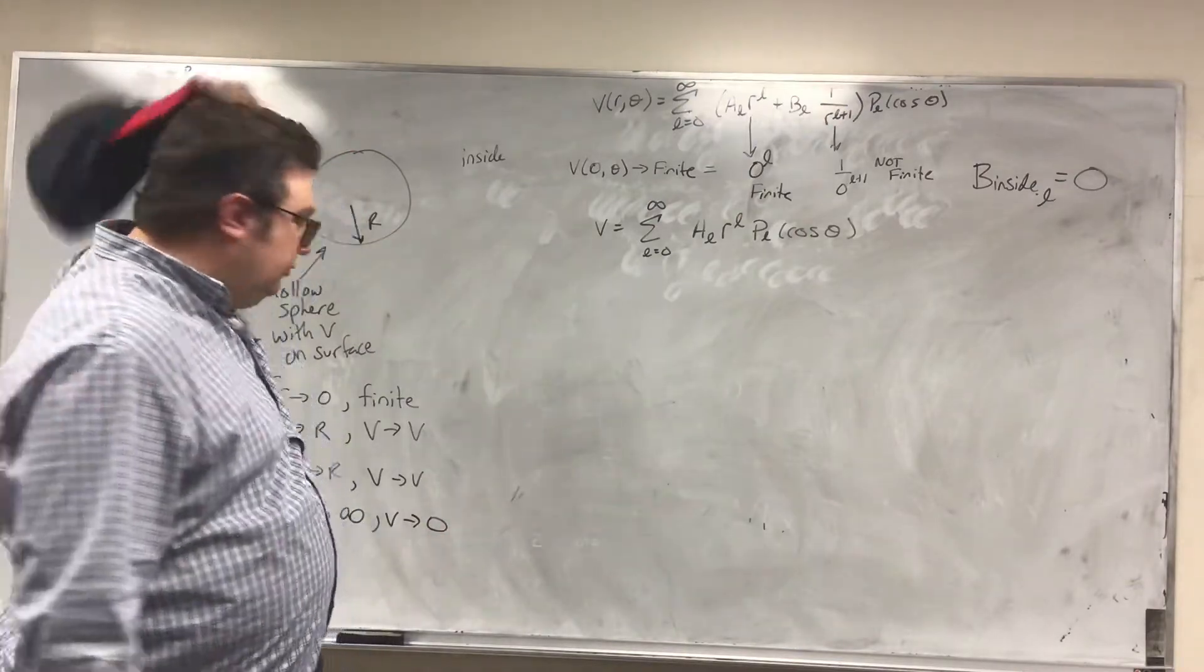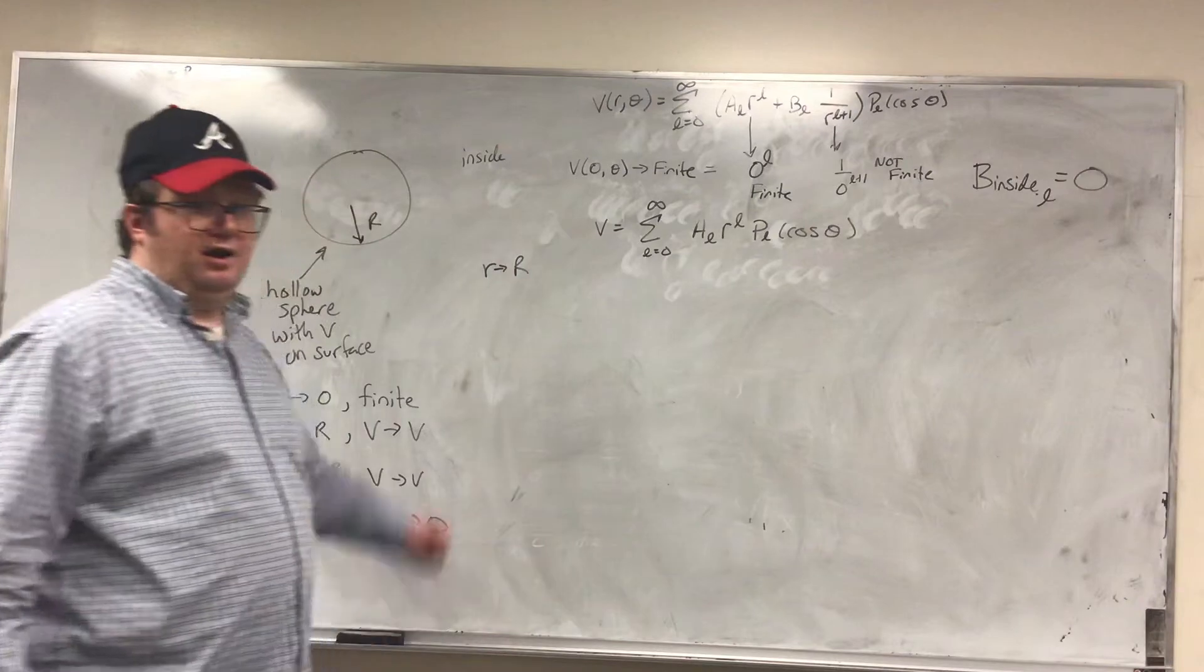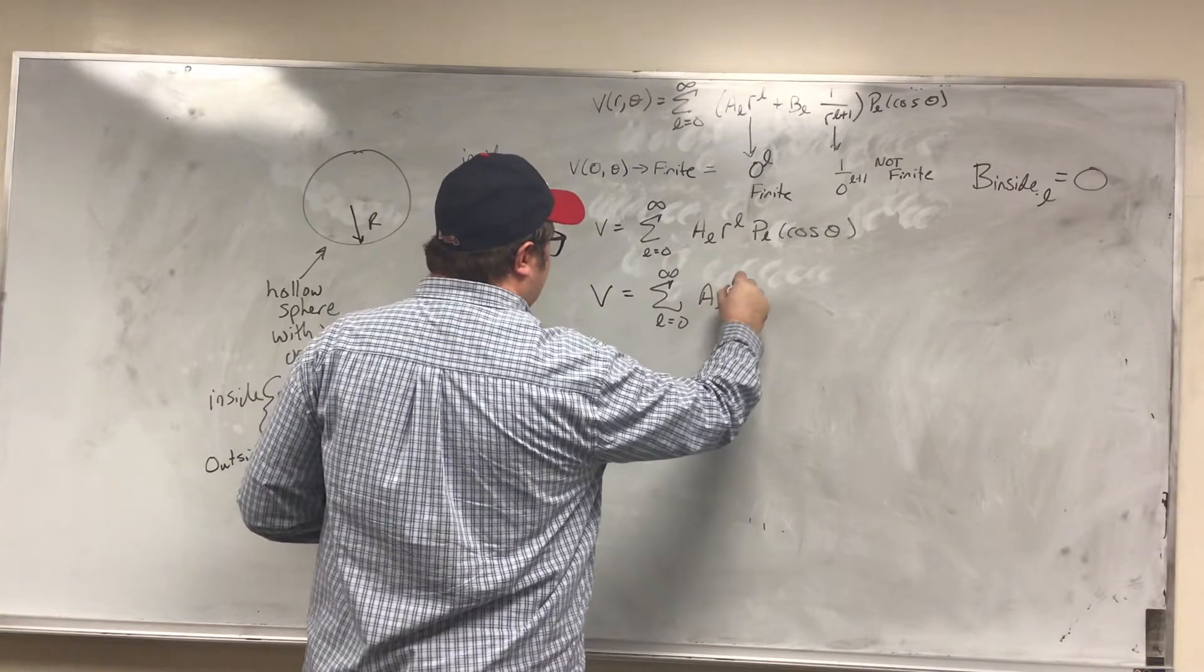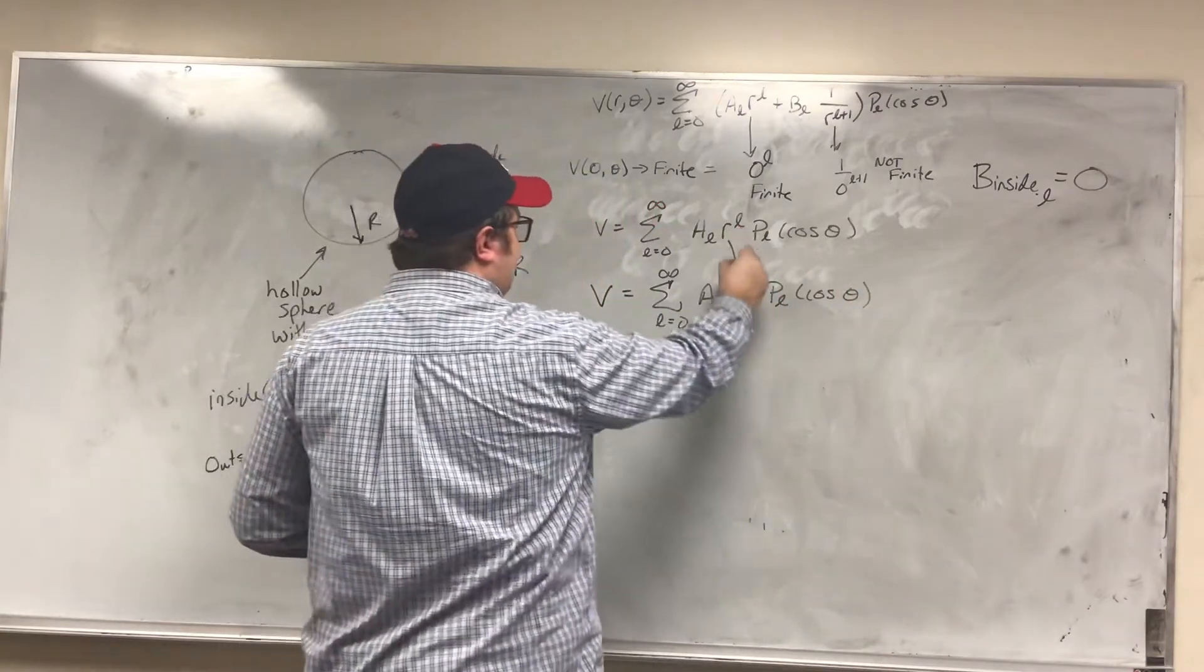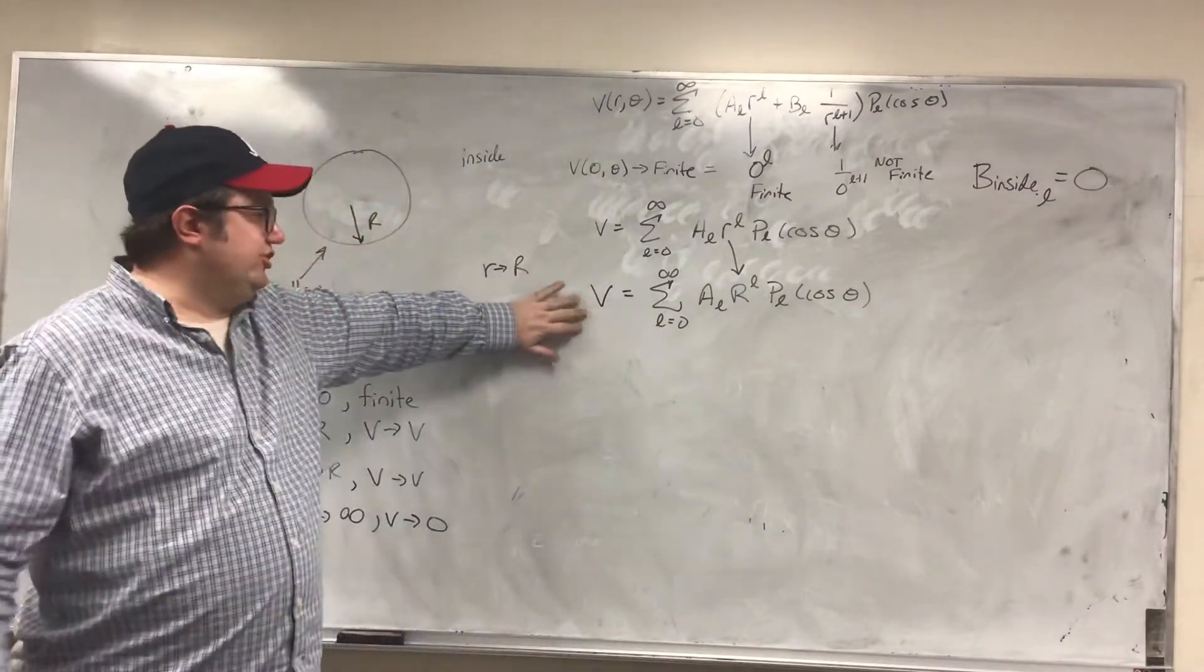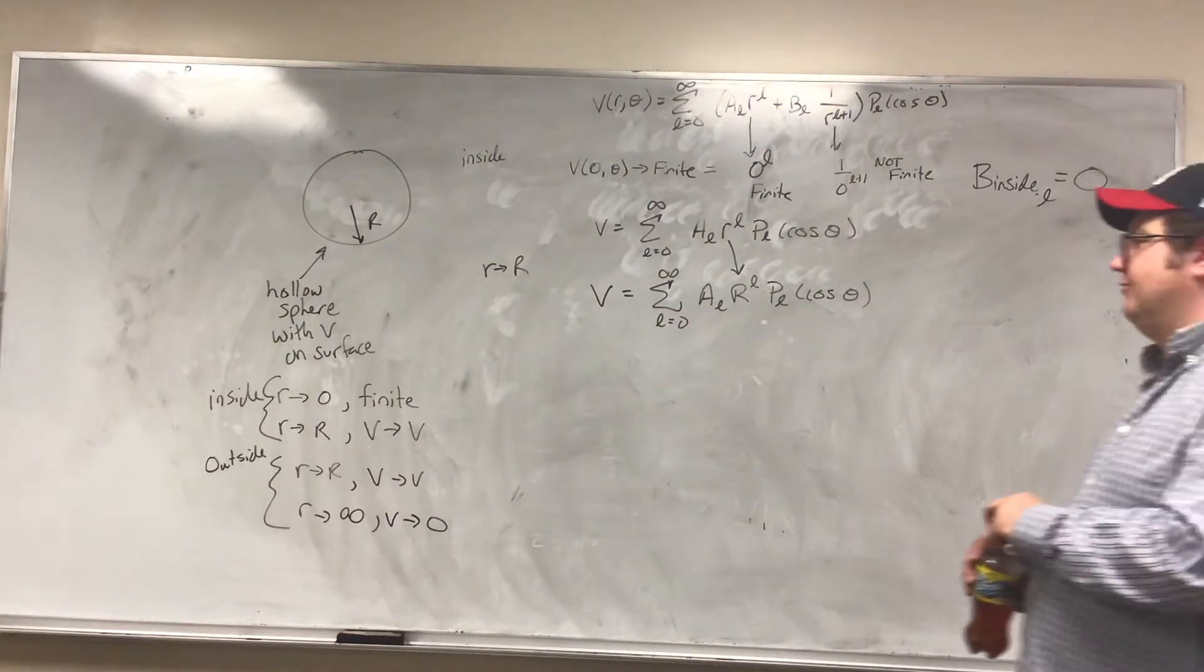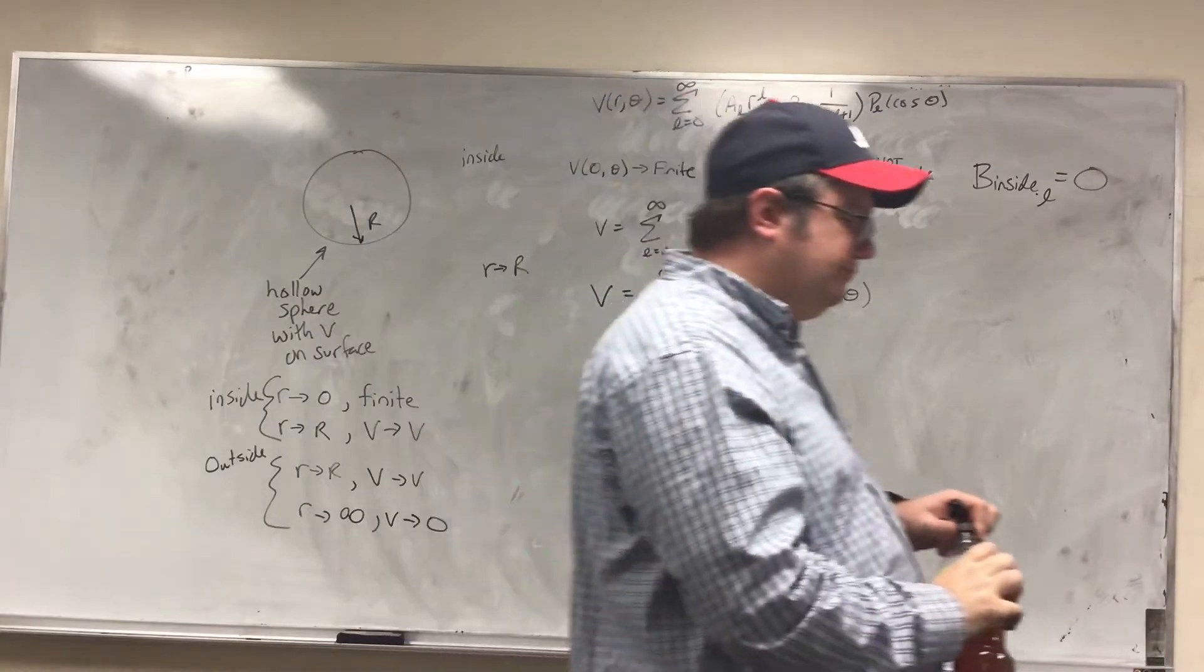Now, let's think about what to do next. Now I want to go to my next boundary for R approaches big R. There, I know that the voltage is equal to V. So this will be the sum of L equals zero to infinity, A_L, big R to the L, P_L, cosine theta, plugging in for big R. So I have a constant on this side of the equation, and I have a series on this side of the equation. And at first, your thought is, well, crap, I can't solve for that. That's going to be way too complicated for me. Wow, that's a lot.